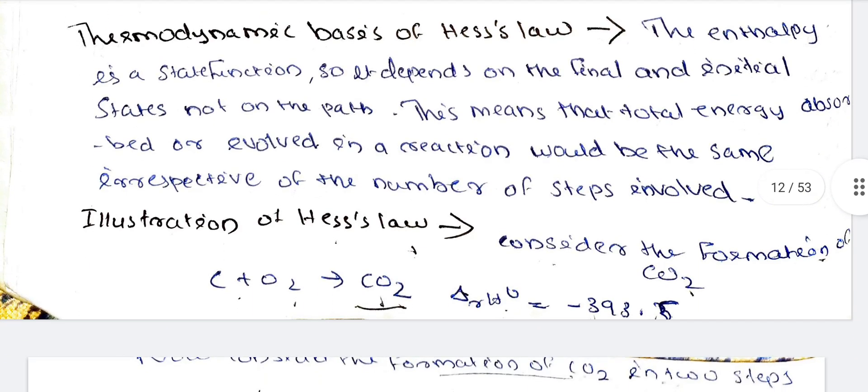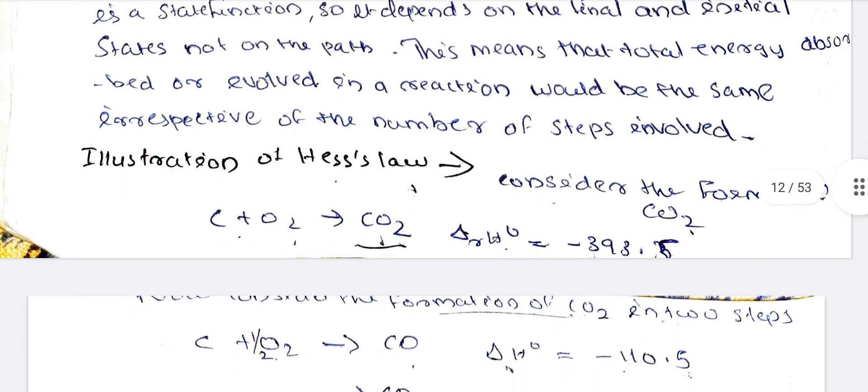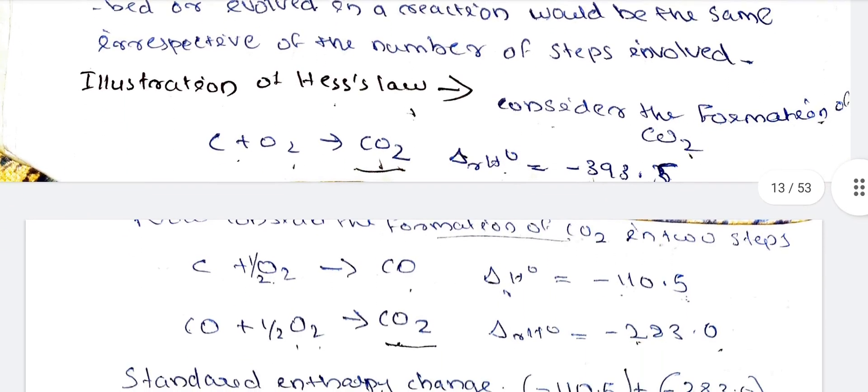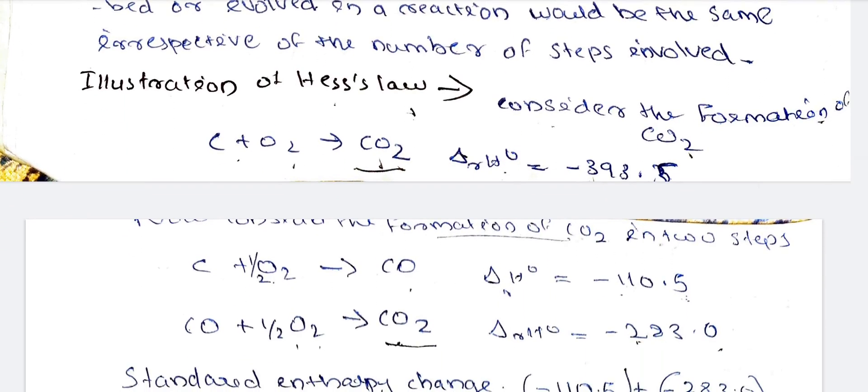Let's take an example to illustrate this. We consider the formation of CO2. CO plus O2 gives CO2. The enthalpy change for this reaction is minus 393.5 kJ.